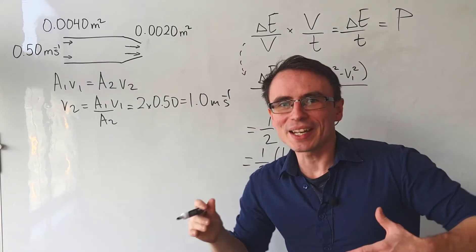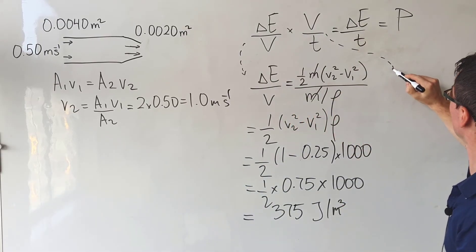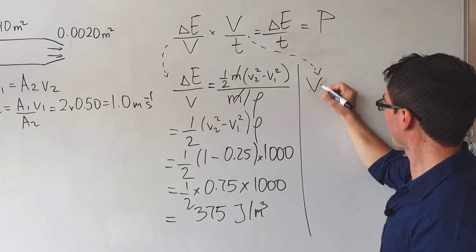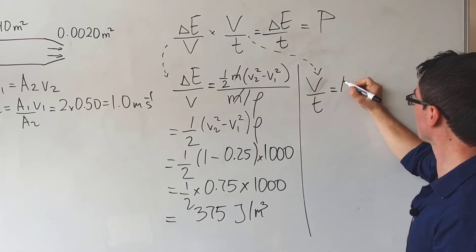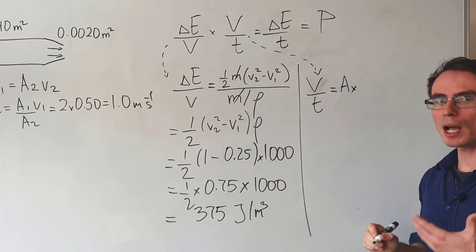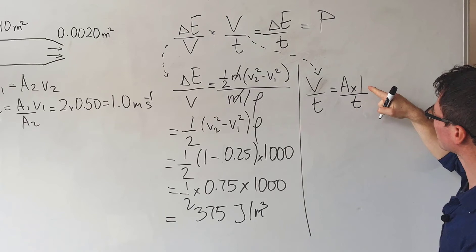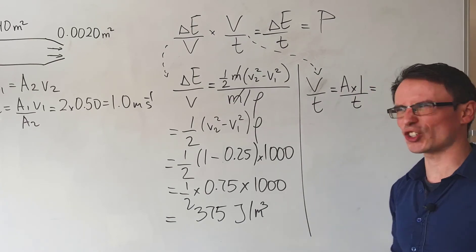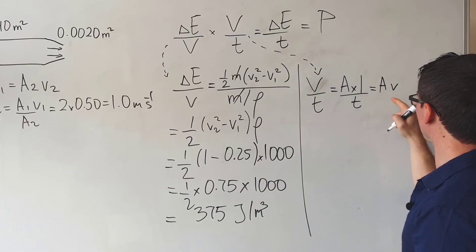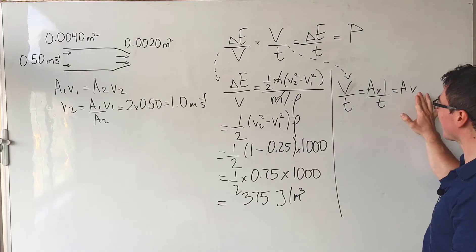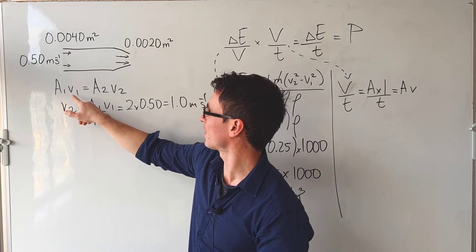Now let's calculate V over t, and V over t will be equal to the area multiplied by the horizontal length that has been traveled over time t. But hang on a minute, L over t is just equal to the speed, so this is equal to A times V. Now this quantity A times V is constant, so it doesn't really matter whether you take A1 times V1 or A2 times V2.